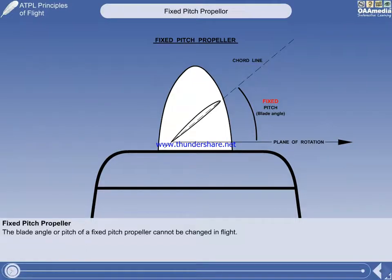Let's examine a fixed-pitch propeller, the type of propeller fitted to the majority of small, single-engine light aircraft. As its name suggests, the blade angle cannot be changed.